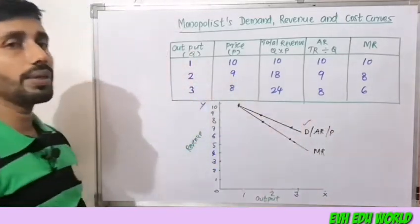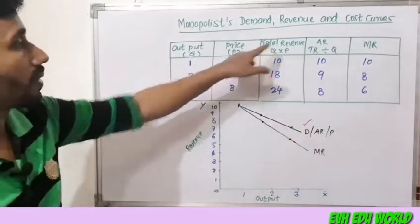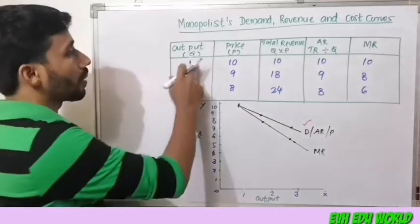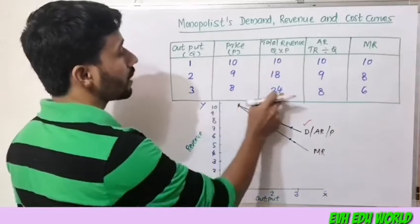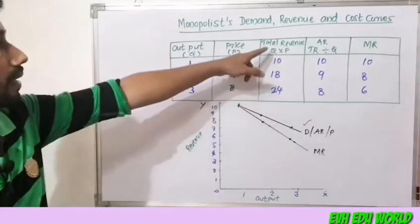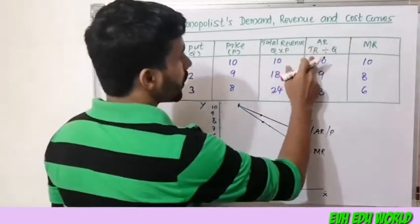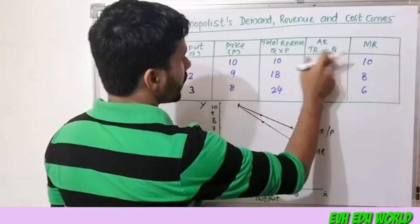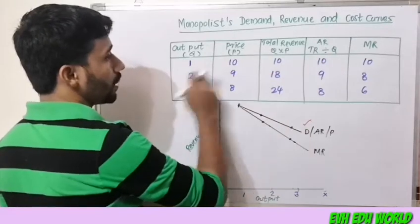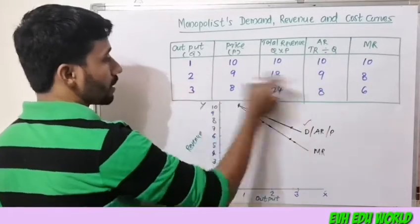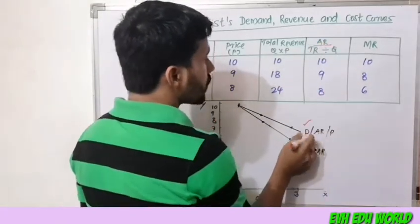Total Revenue is calculated as price multiplied by quantity: at output 1 it is 10, at output 2 it is 18, and at output 3 it is 24. Average Revenue equals Total Revenue divided by quantity, giving values of 10, 9, and 8 — which is the same as the demand curve.